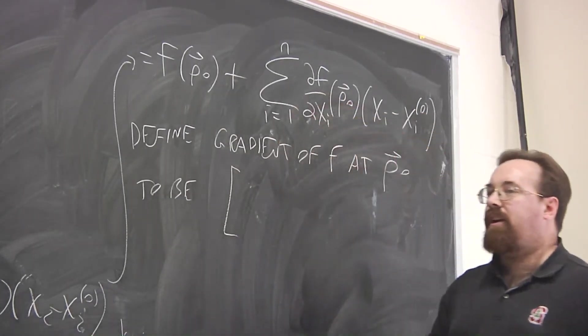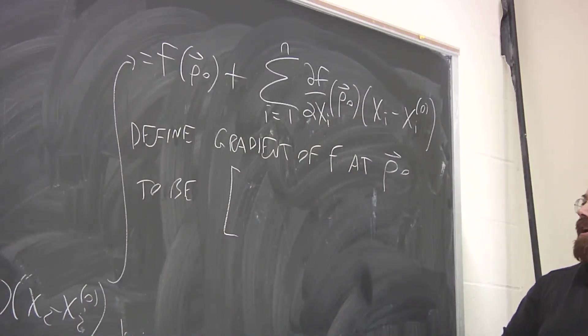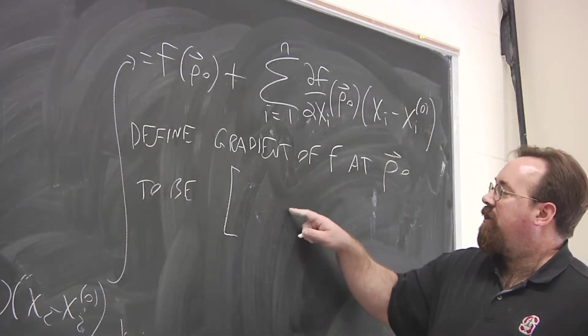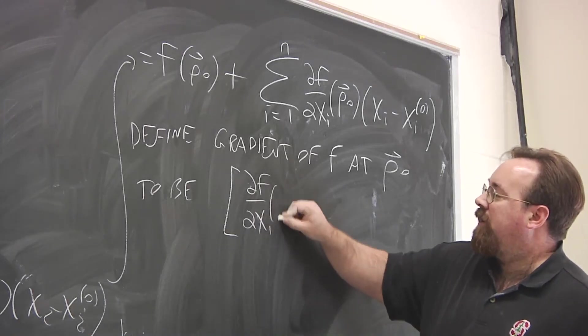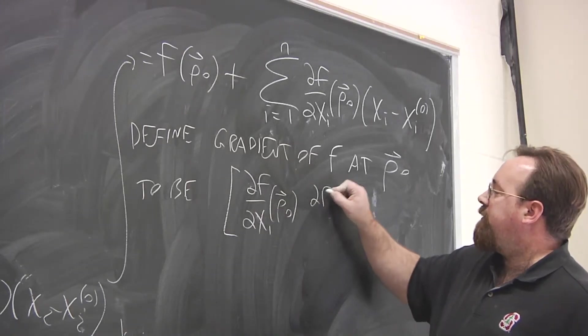And when it's a gradient, we tend to write it as a row vector. And you'll see why a little later on. We take all the partial derivatives, starting from the first variable, evaluated at that point, and we arrange them in a row vector.